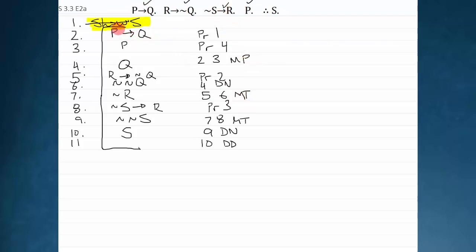Crossing off the show signifies that I've successfully done what I set out to do and showed that S follows from my premises. This is a complete derivation — every single line is boxed in or is a crossed-off show, every single line has an annotation.